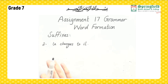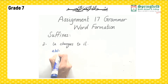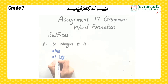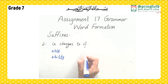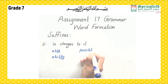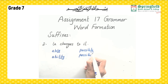The next spelling rule is: le changes to il. For example, able — this becomes ability, where we add -ity but we remove the -le and replace it with -il. Another example is possible, which becomes possibility — the -le is removed and replaced with -il, and then -ity is added.